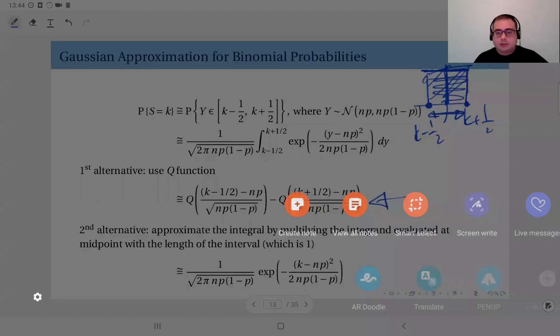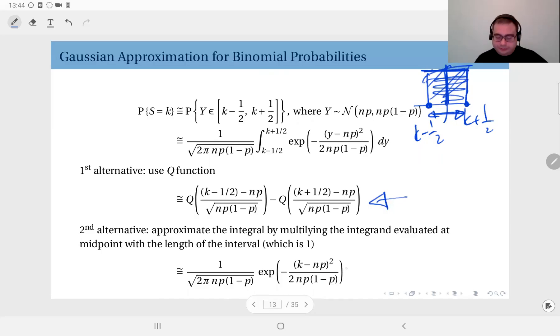So that's just the Gaussian pdf evaluated at k. That's also another good approximation.